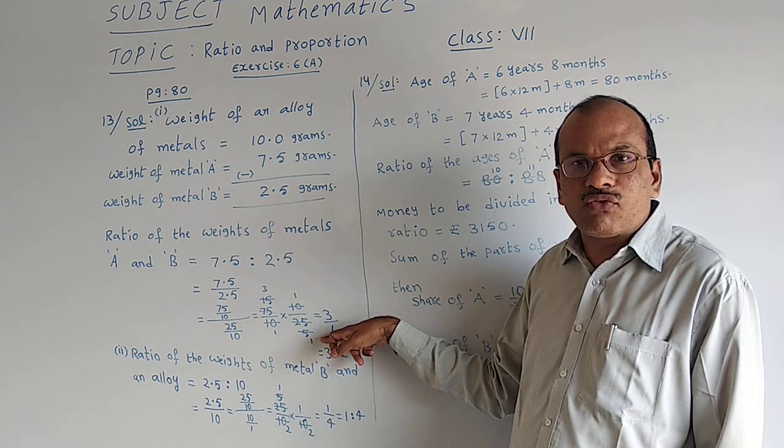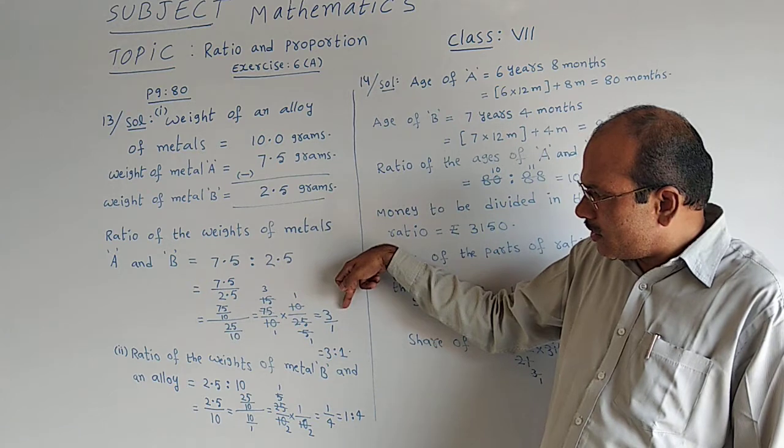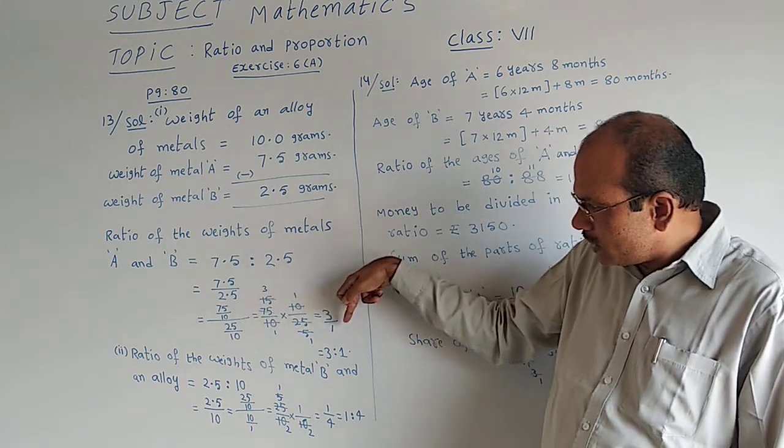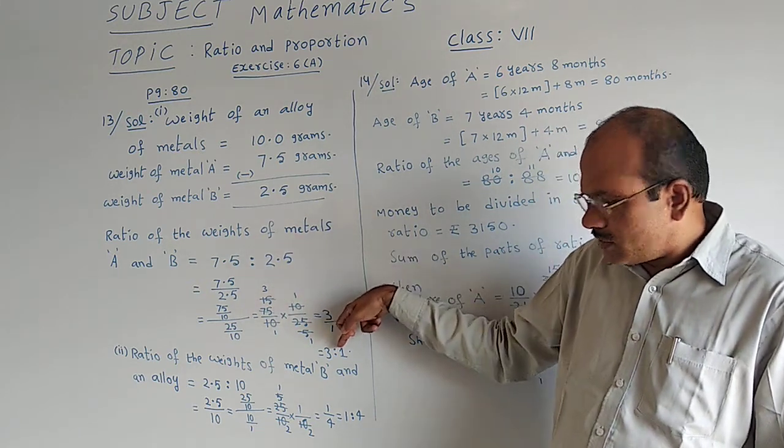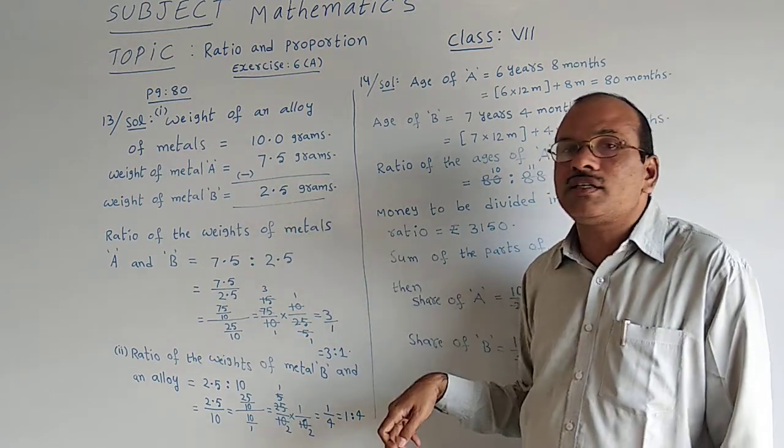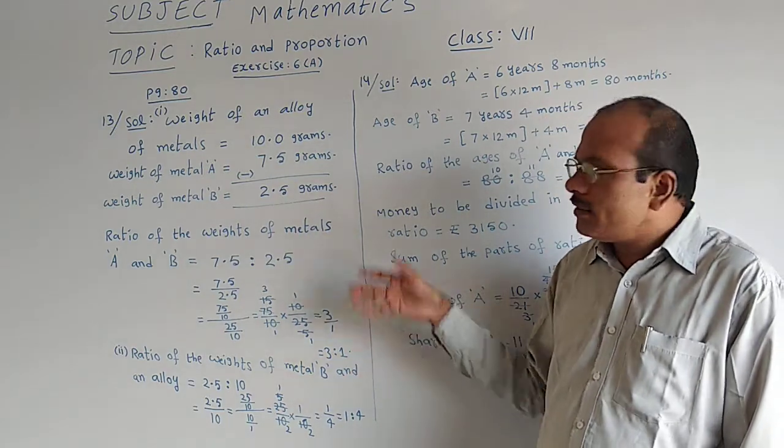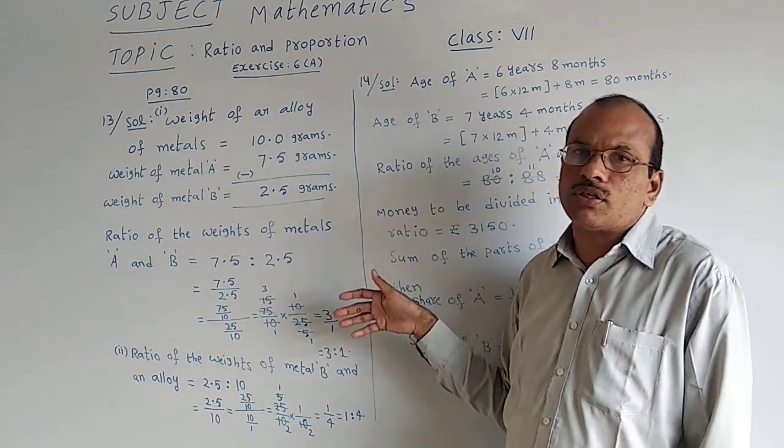Again, 5 table: 5 ones are 5, 5 threes are 15. So 15 by 5 equals 3 by 1, written as 3 is to 1. This is the ratio for the weights of metals A and B. That is the first bit to answer in the 13th question.